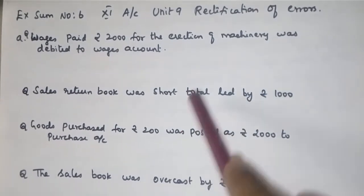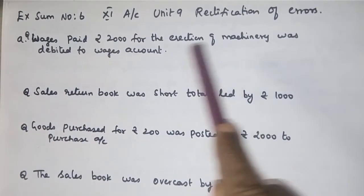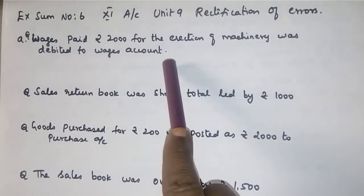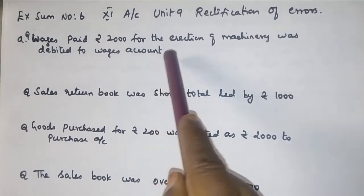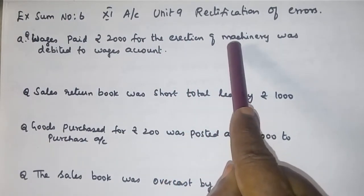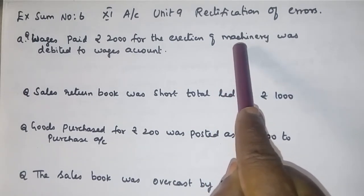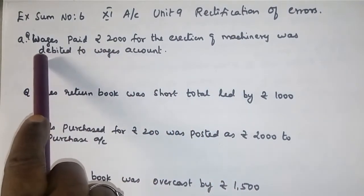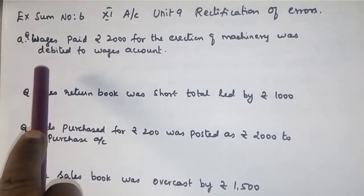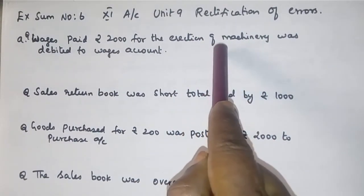They have asked us to rectify the following errors, and they were located before preparing the trial balance. In the first transaction, wages paid rupees 2000 for the erection of machinery was debited to wages account. Because of the erection charge - that is, expenses related to the purchase of machinery - it should be treated as machinery or furniture. That means it is an installation charge, so we should debit the machinery account.